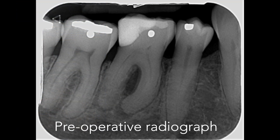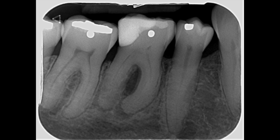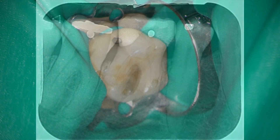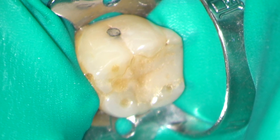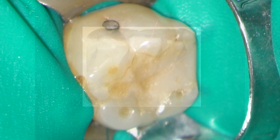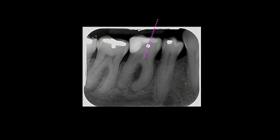Here you can see the preoperative radiograph of the mandibular right first molar. The tooth is associated with periapical periodontitis and had been symptomatic. The preoperative radiograph gives us loads of information about the tooth before we start root canal treatment, and in this case it wasn't necessary to expose a CBCT.